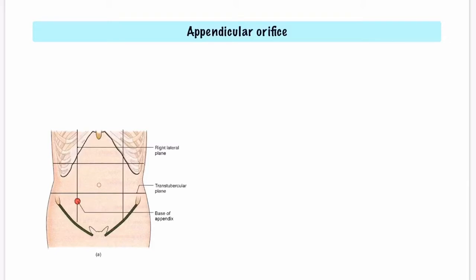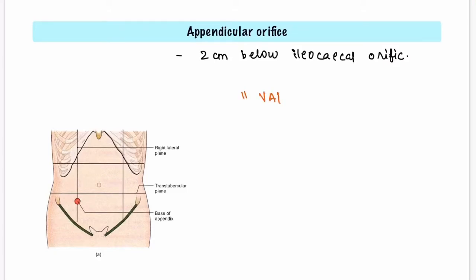Let's talk about the appendix orifice. It lies 2 cm below the ileocecal orifice and is often guarded by a mucosal fold called the valve of Gerlach. The surface marking of the appendix orifice is just 2 cm below where the transtubercular plane and the right lateral plane meet. Right 2 cm below that intersection is the base of the appendix.